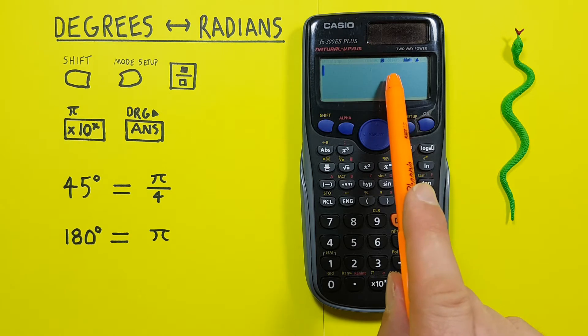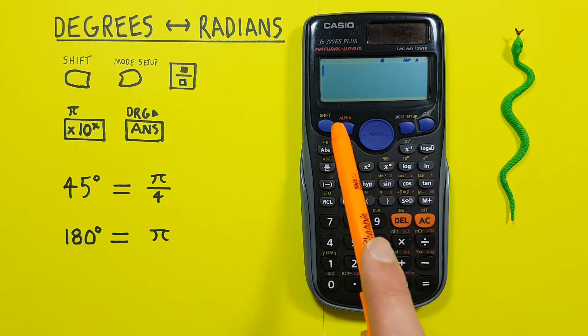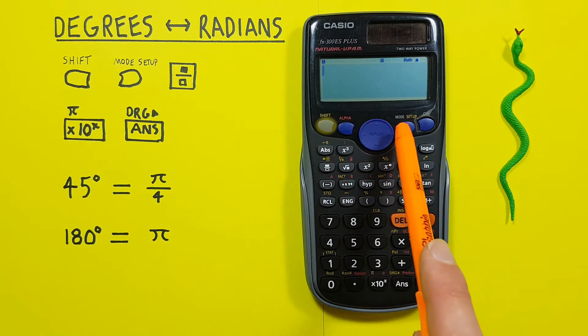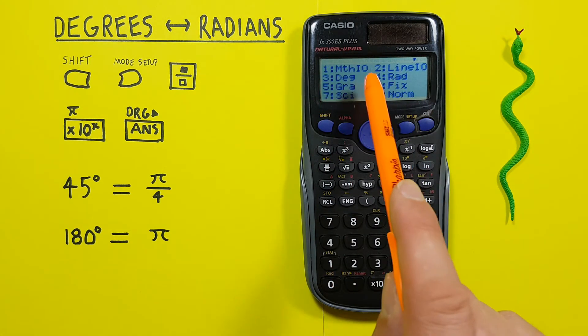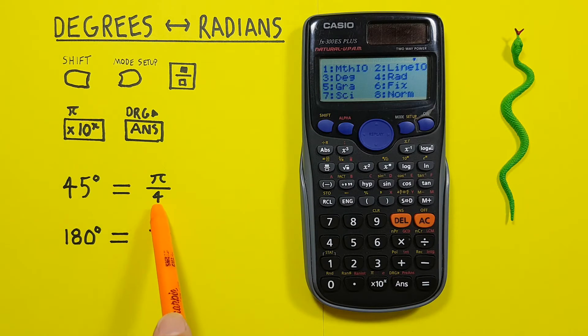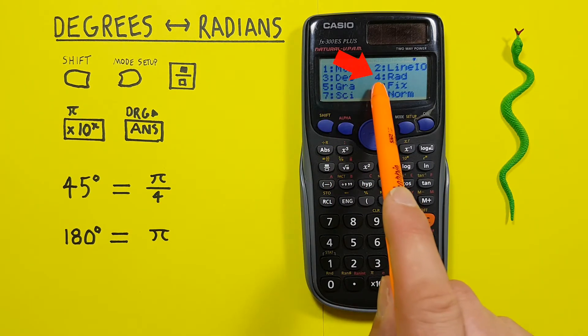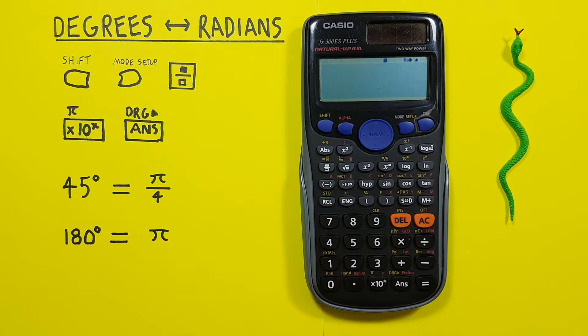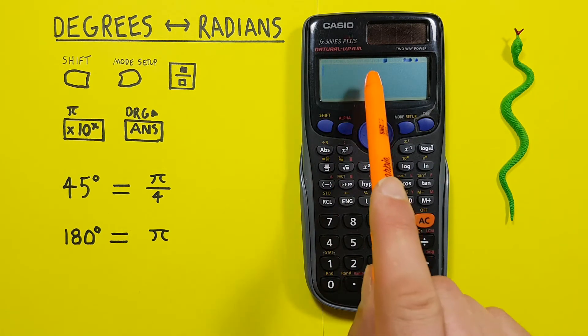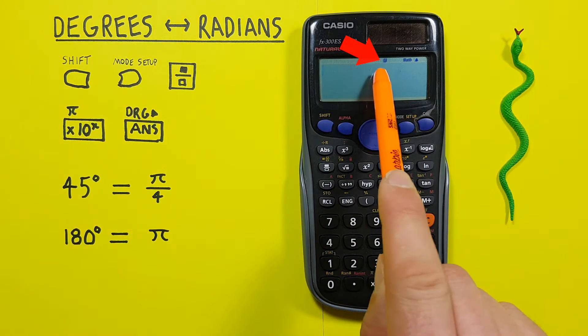To change that, we press Shift Setup. That brings us to this menu here. We want radians mode, so we select number 4, rad. We now see we have an R at the top of our screen, letting us know we're in radians mode.